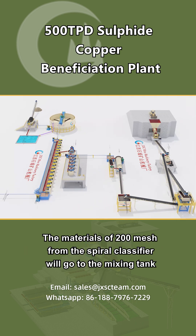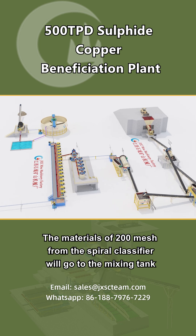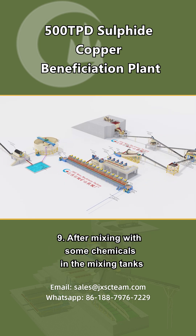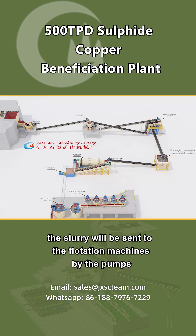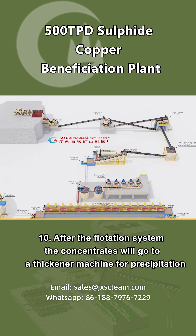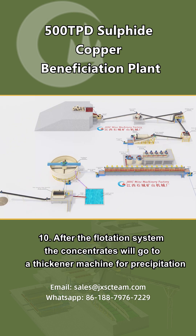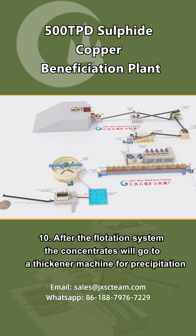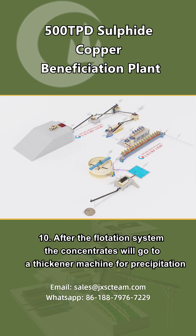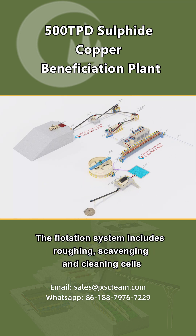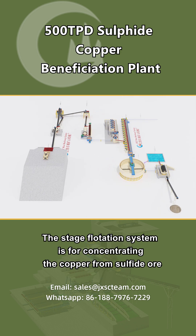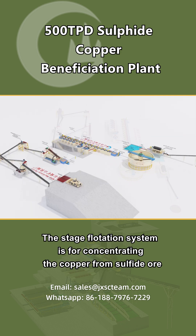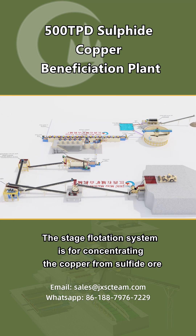The materials of 200 mesh from the spiral classifier will go to the mixing tank. After mixing with some chemicals in the mixing tanks, the slurry will be sent to the flotation machines by the pumps. After the flotation system, the concentrates will go to a thickener machine for precipitation. The flotation system includes roughing, scavenging, and cleaning cells. The stage flotation system is for concentrating the copper from sulfide ore.